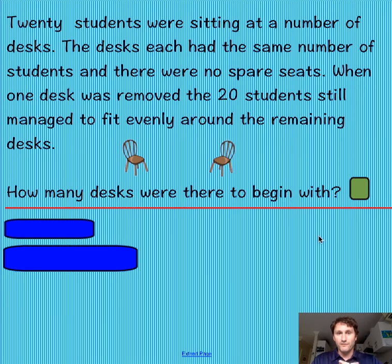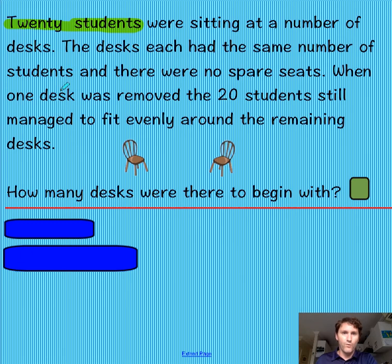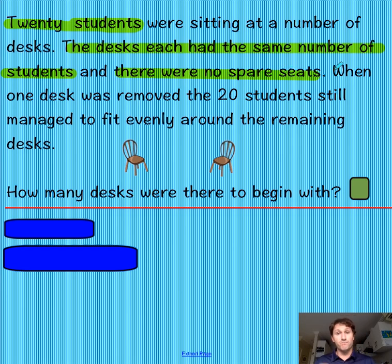After reading the problem, the second thing we should do is look for the key information that's going to help us solve it. Let me grab my highlighter pen. The first key piece is that we have 20 students. We know they're sitting at a number of desks — we don't know what that number is yet, that's what we have to find out. But we do know the desks each had the same number of students and there were no spare seats. No leftovers, no remainders — so what we're talking about here is multiplication or division.